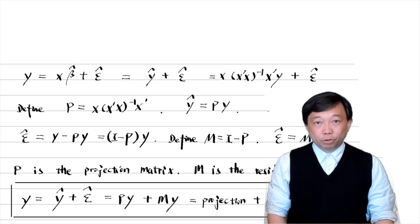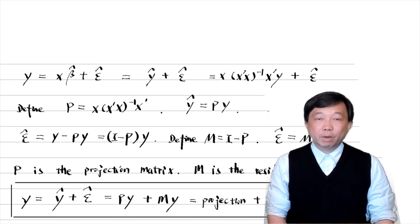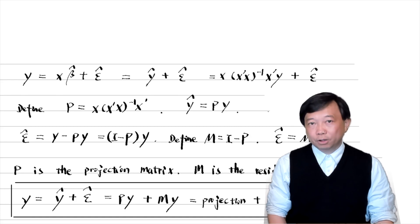We have already used the residual maker matrix when we discussed the Frisch-Waugh-Lovell theorem and the partialing out implementation of the OLS estimator in multiple regression.